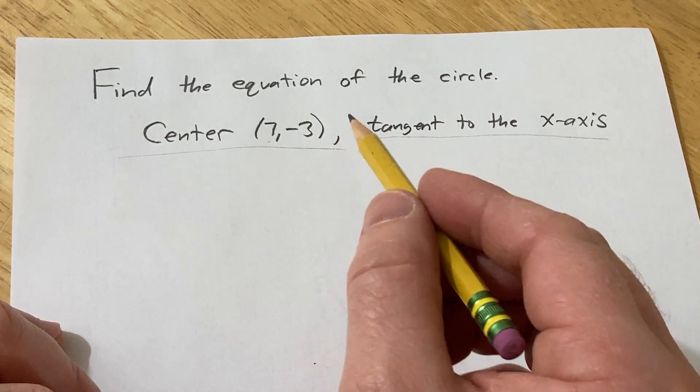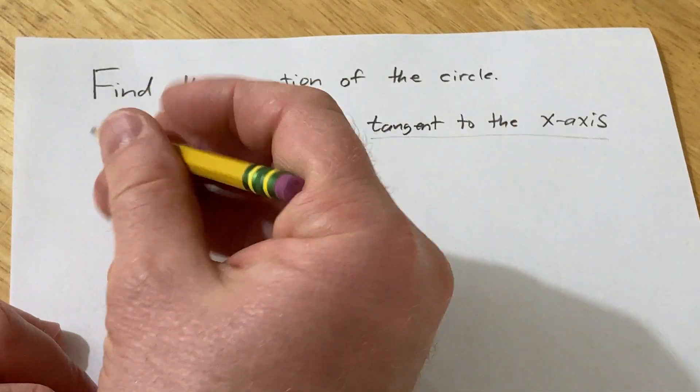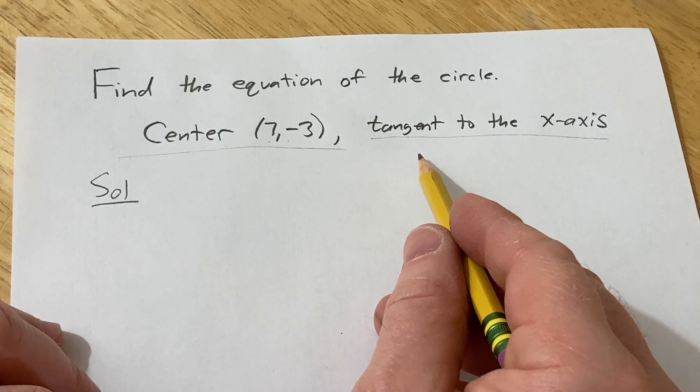To find the equation of a circle we need two things: we need the center and we need the radius. So we already have the center, we just need the radius.